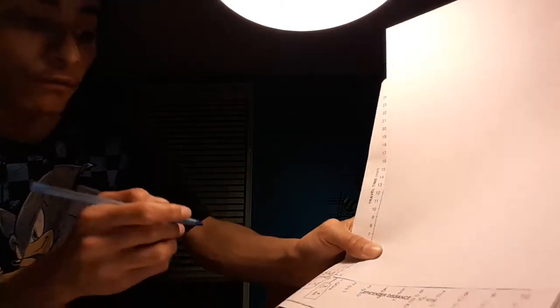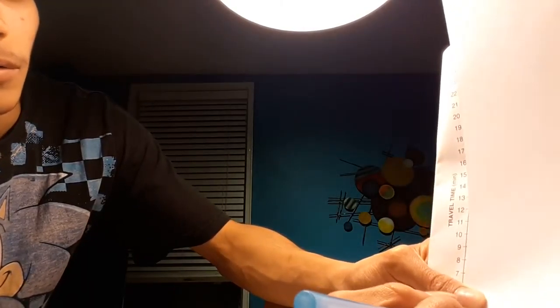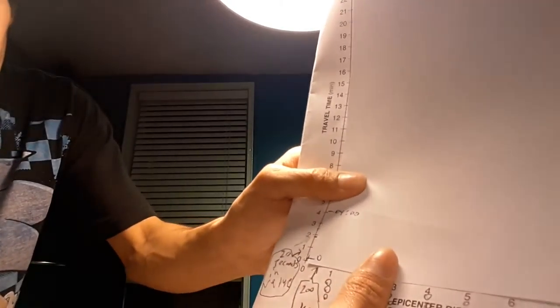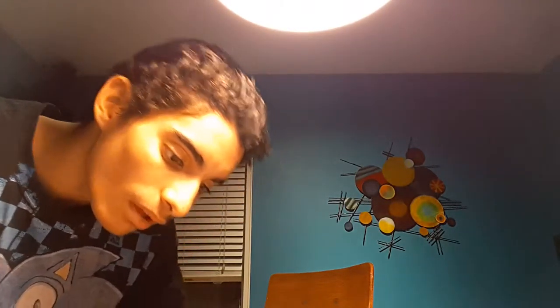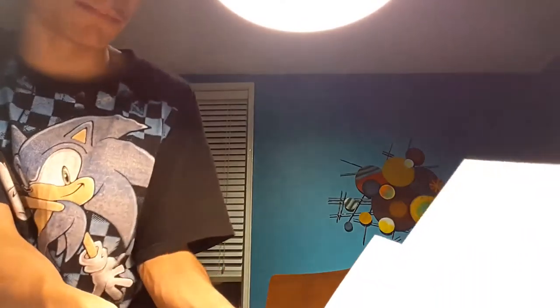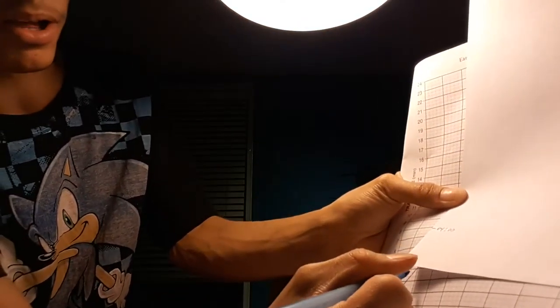You're going from 4 minutes. You're going to go 1, 2, 3, 4. 4 minutes. Now you're going to slide where the P waves and S waves meet. Where you find it, where the P waves and S waves meet, you're going to put a little line like that. There you go. That answer is 2,000 kilometers.